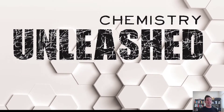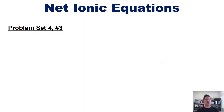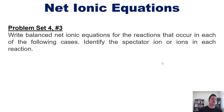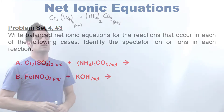Let's take a look at an actual example from a university student's homework. The question asks: please write out net ionic equations for the reactions that occur in each of the following cases, then identify the spectator ion or ions in each reaction.